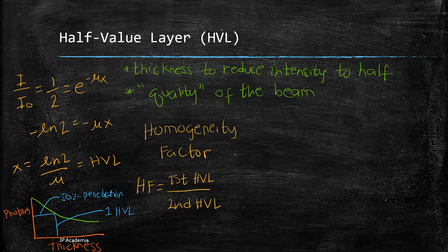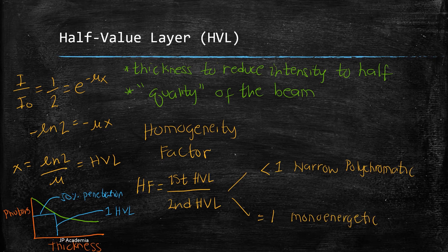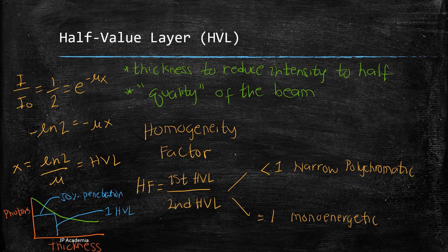Consequently, the second half value layer is the amount of material needed to reduce the intensity by one half after the previous half value layer.